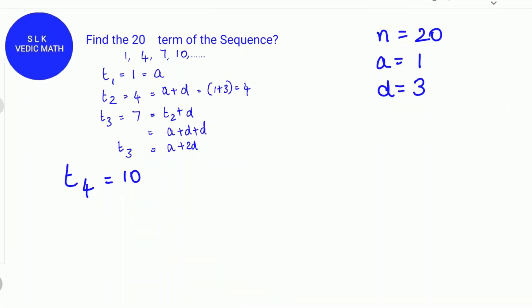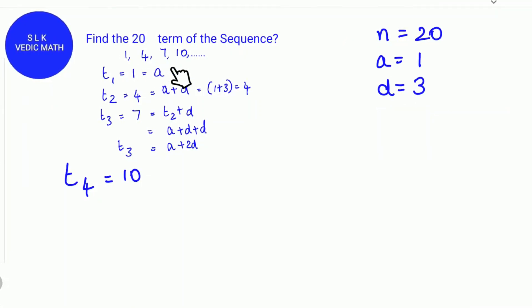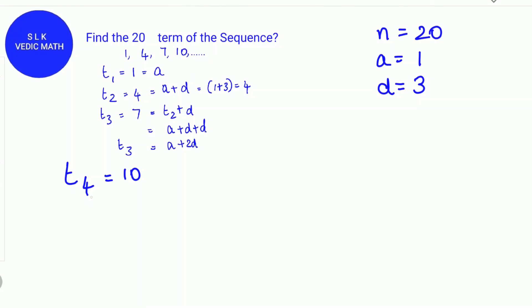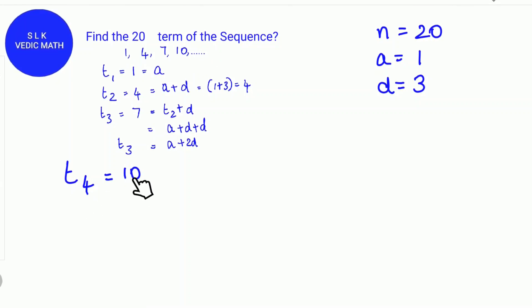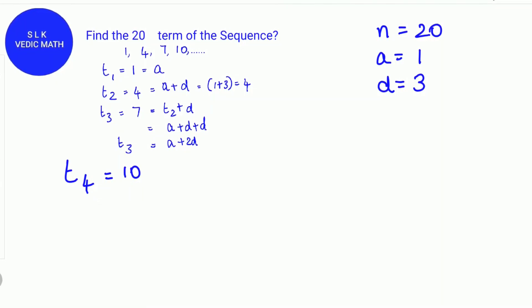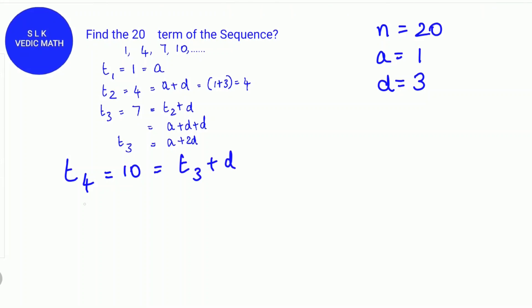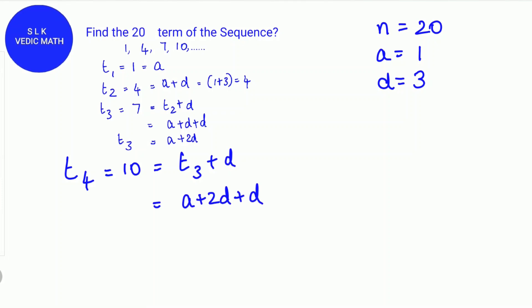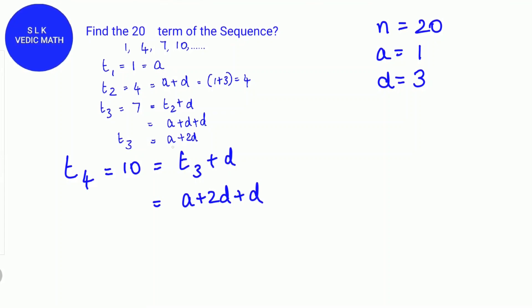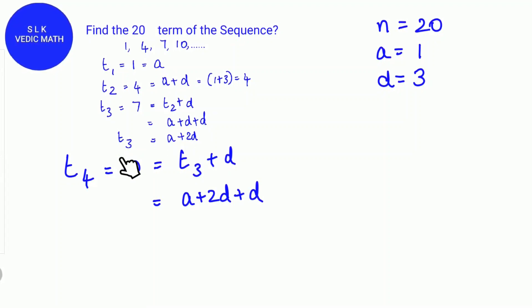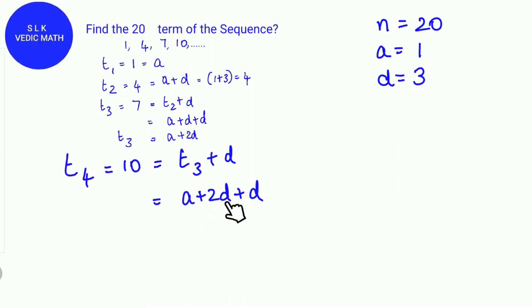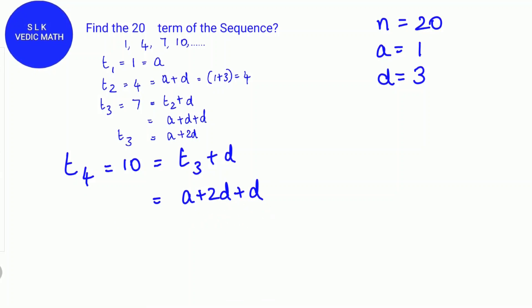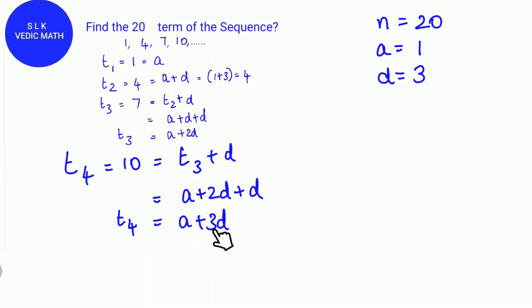The fourth term in the sequence is 10. T4 is 10. T4 is T3 plus d. We substitute the value a plus 2d. So T4 is a plus 3d.